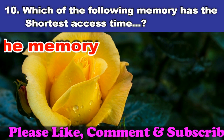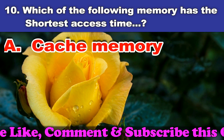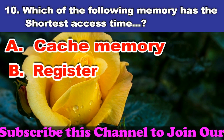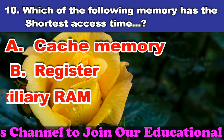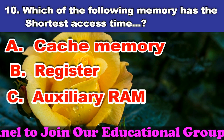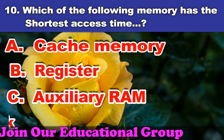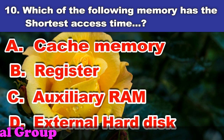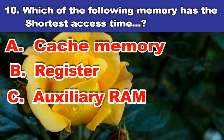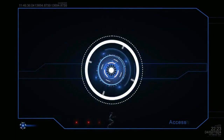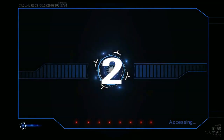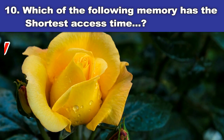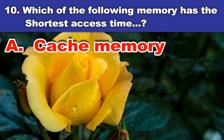Tenth question: Which of the following memory has the shortest access time? A. Cache memory. B. Register. C. Auxiliary RAM. D. External hard disk. And the answer is cache memory.